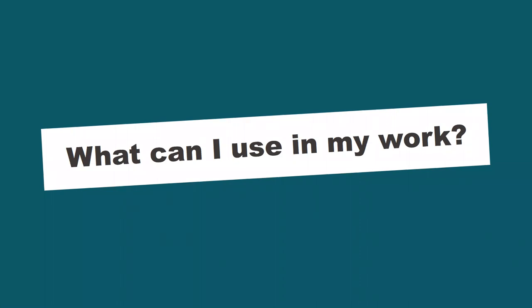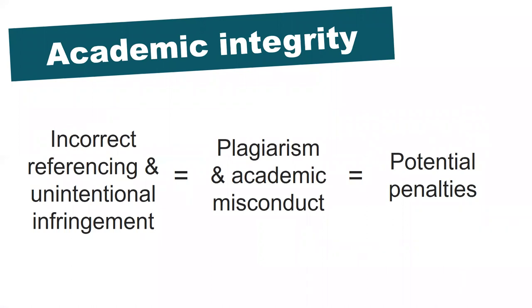The first step for most researchers and academics to think about when it comes to copyright is how it influences which materials they can use in their own work. One reason this issue has become more important in recent years is the increased emphasis on academic integrity — a set of core values underpinning an ethical research process. Copyright and academic integrity mainly intersect when we talk about referencing. It's important to properly reference the ideas or work of others, or even your own formally published materials, to avoid accusations of misconduct and potential penalties.